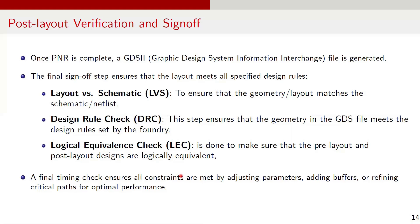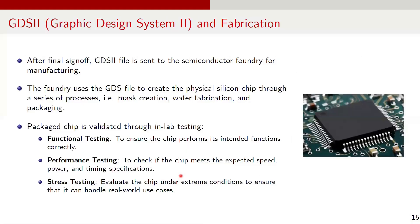After successful verification and timing closure, the design is considered ready for tape-out and fabrication. After the final GDS2 file is generated and verified, it is sent to a semiconductor foundry for fabrication. The foundry uses this GDS file to create a physical silicon chip through a series of processes, for example, mask creation, wafer fabrication, and packaging. Once the chip is fabricated and packaged, it undergoes post-silicon testing in the lab before it can be widely marketed. This stage is crucial for ensuring the functionality, performance, and reliability of the chip in real-world conditions.